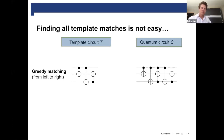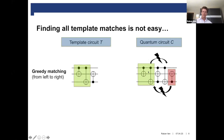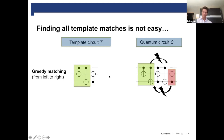If you would now do greedy matching here, starting from the left and going to the right, we would first match these two gates. Now the last gate of the circuit could in principle be matched with this gate in the template. But the problem is that we cannot make the gate sequence connected — we cannot move this CNOT gate to the right or this CNOT gate to the left, because they do not commute.